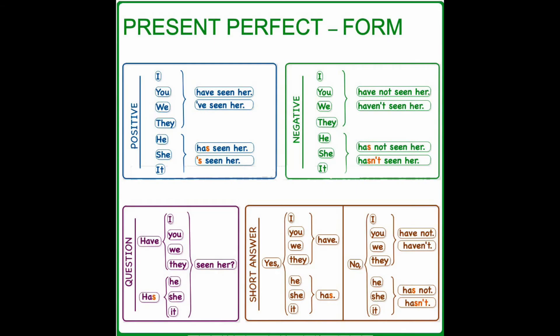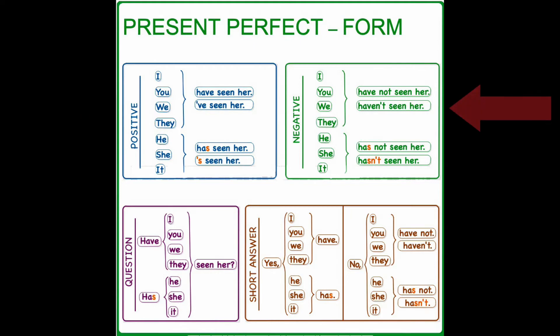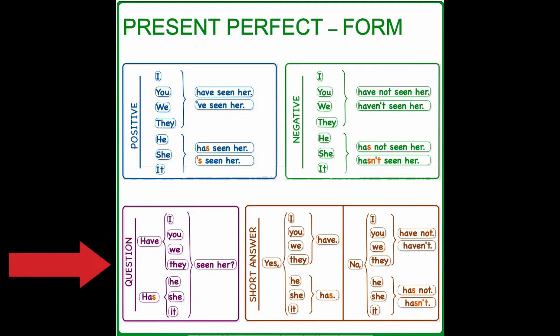In this slide, we want to check the Present Perfect form. For the positive, first we have subject, and after that an auxiliary — which is 'have' and 'has' — and after that the verb in past participle form. For example, 'I have seen her.' For negative, we add 'not' to the auxiliary, so 'haven't' and 'hasn't' will be used. And for the question form, we just invert the place of subject and auxiliary.